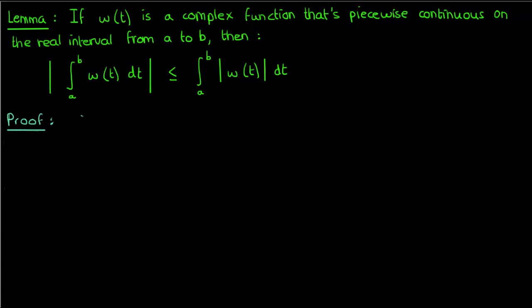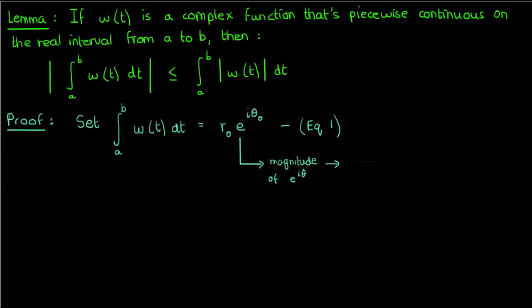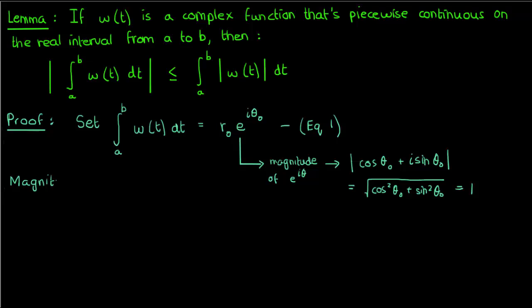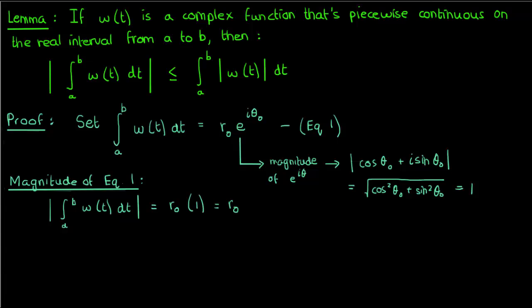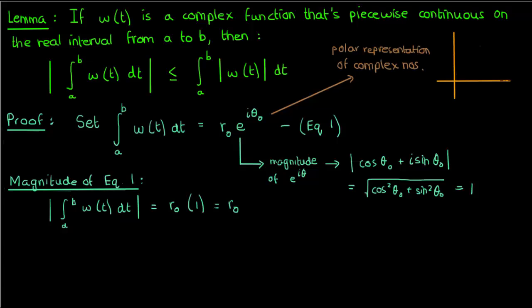To prove this lemma, let's set the integral of w of t from a to b to some complex number given by r naught times the exponential of i theta naught. Since this exponential term just has a magnitude of 1 because it's only made up of a cosine and a sine, I can also write r naught as the magnitude of the integral from a to b of w of t dt if I just take the magnitude of both sides. Recall that r naught times the exponential of i theta naught is the polar representation of a complex number, where instead of writing x plus yi, I write the complex number in polar form.